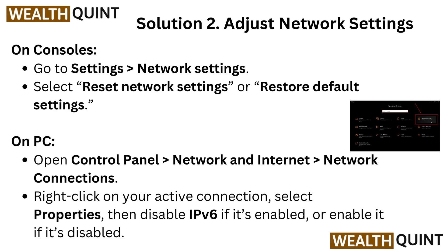Solution 2: Adjust network settings. On console, go to Settings, then go to Network Settings, and select 'Reset network settings' or 'Restore default settings.' On PC, open Control Panel, then go to Network and Internet, then go to Network Connections. Right-click on your active connection, select Properties, then disable IPv6 if it's enabled, or enable it if it's disabled.